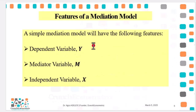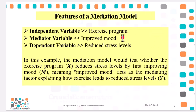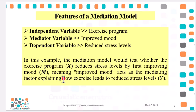A simple mediation model will have the following features: dependent variable Y, mediator variable M, and independent variable X. For example: independent variable — exercise program; mediator variable — improved mood; dependent variable — reduced stress levels. The mediation model will test whether the exercise program reduces stress levels by first improving mood. This implies that improved mood acts as a mediating factor explaining how exercise can lead to a reduction in stress levels.